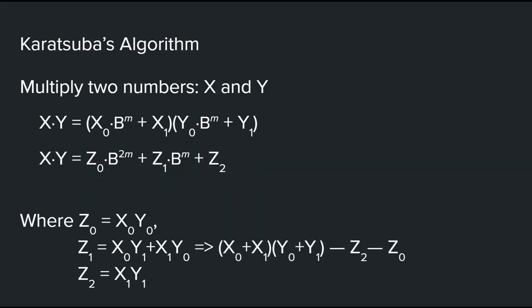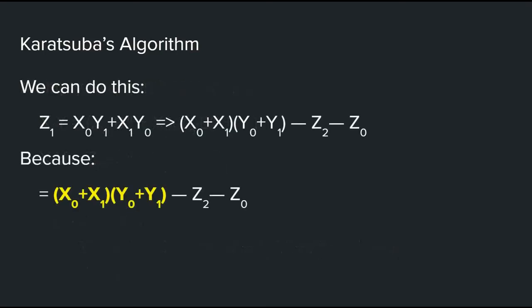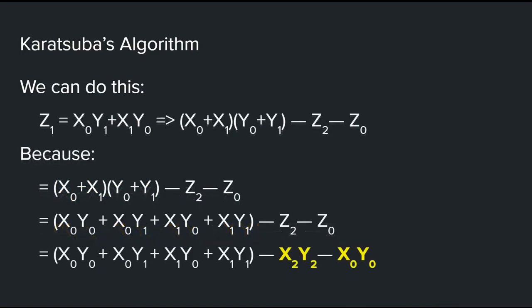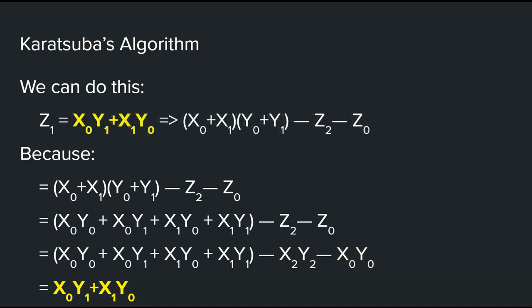Well, Anatoly Karatsuba discovered that Z1 can be converted into x0 plus x1 times y0 plus y1 minus Z2 minus Z0. And we can do that because if we substitute x0 plus x1 and y0 plus y1 and then expand out the terms with FOIL. Who knew FOIL would still be so useful, right? And then substitute Z2 and Z0 like so. So, you would get x0, y1 plus x1, y0. Which is the same as what we started with.